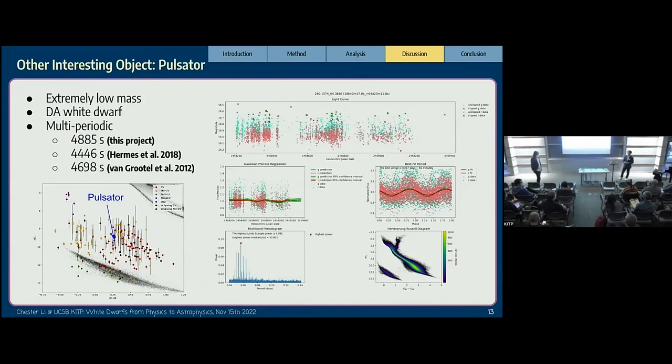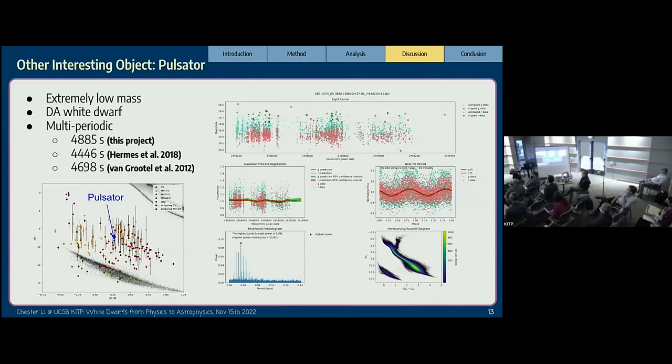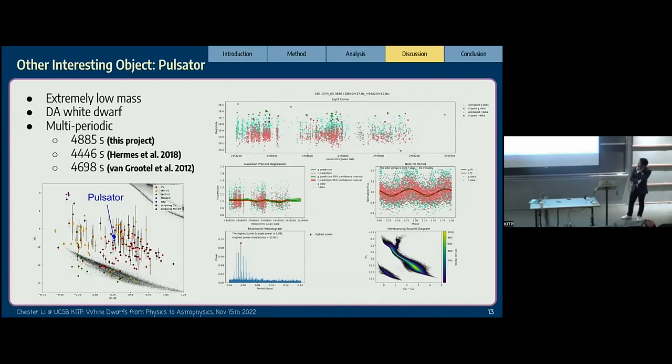Sometimes in ZTF there are these deep drilling fields where you have very dense sets of observations. What kind of kernel did you use for your Gaussian process? Did you have to throw those out? We use a radial basis function kernel. It didn't get upset with the deep drilling field observations.